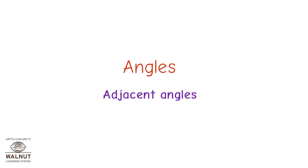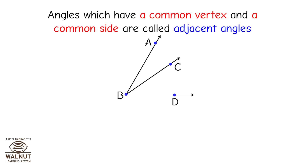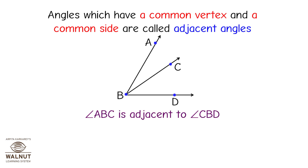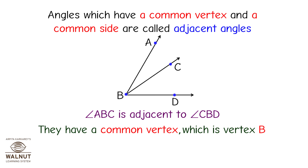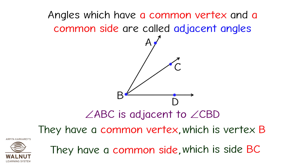Adjacent Angles. Angles which have a common vertex and a common side are called adjacent angles. Angle ABC is adjacent to angle CBD. They have a common vertex, which is vertex B, and a common side, which is side BC.